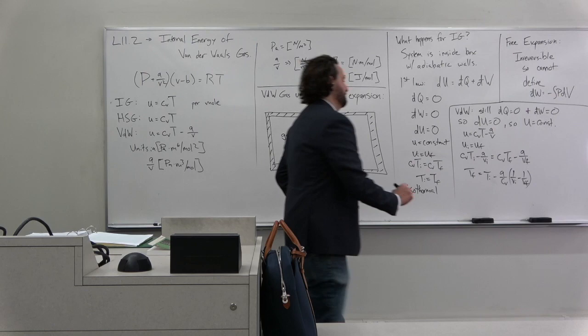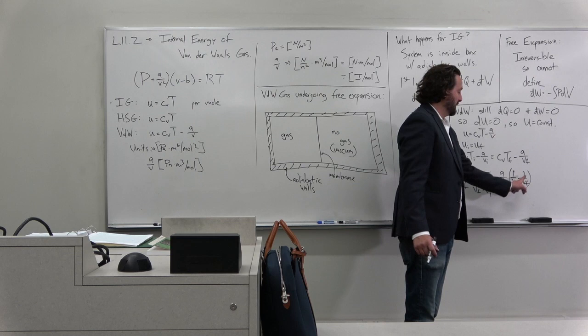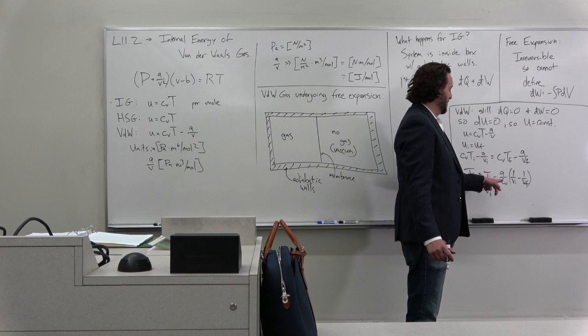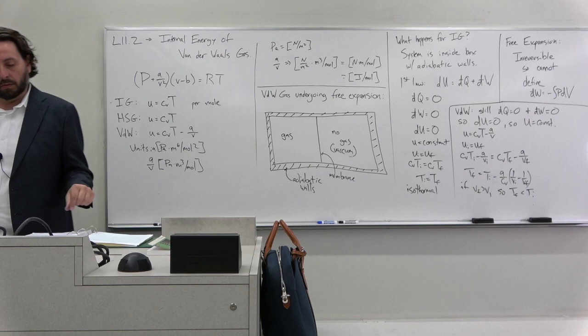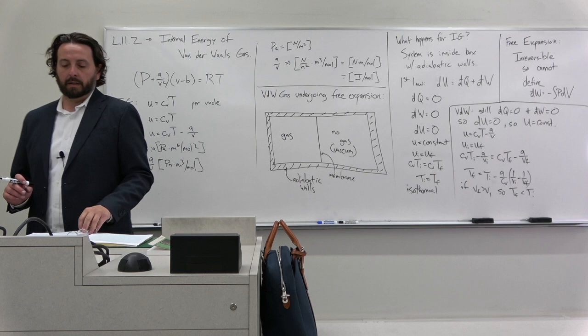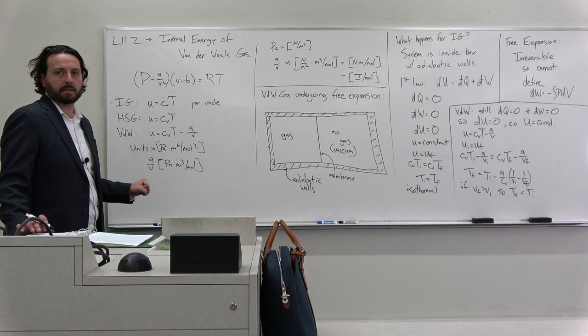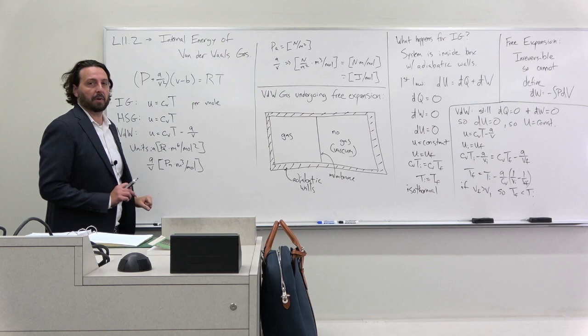So if V final is greater than V initial, now this is bigger, so this is a smaller number. So if this is a smaller number than this, this term will be positive. We have a minus sign here. So Tf is less than Ti. We got cooling. So we see that for free expansion, we get cooling upon free expansion for a van der Waals gas. So maybe this is going to give us cooling when we did our throttling as well. So let's pause here, go to 11.3, where we're going to do throttling now for the van der Waals gas.